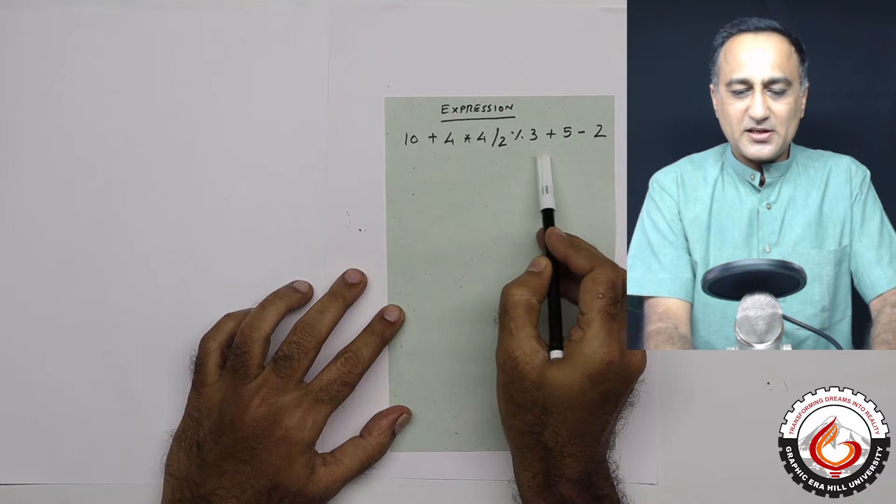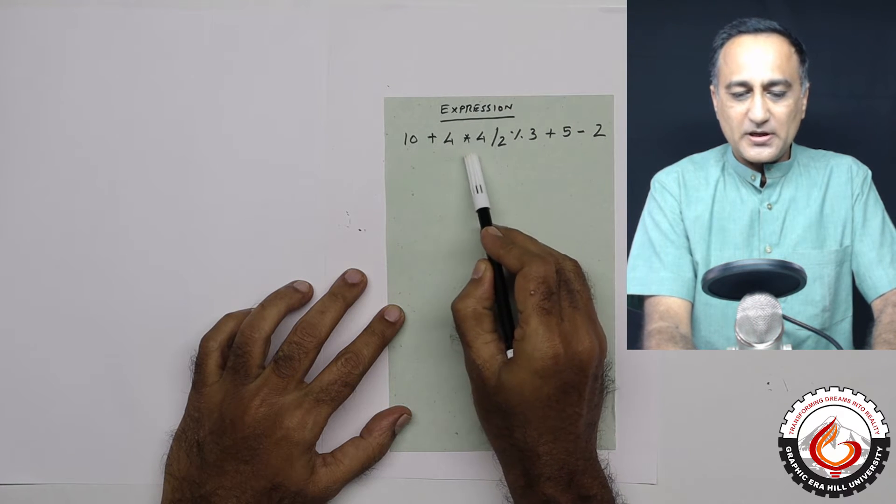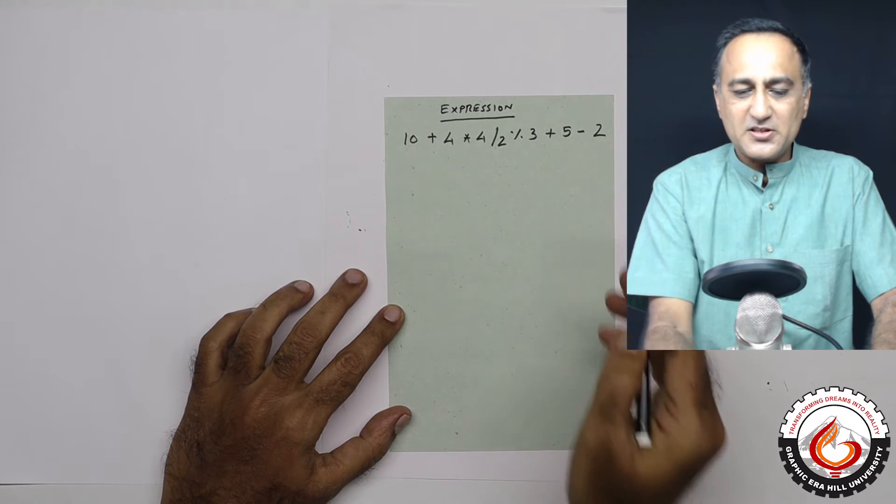This is an arithmetic expression. The expression is 10 plus 4 multiplied by 4 divided by 2 mod 3 plus 5 minus 2.